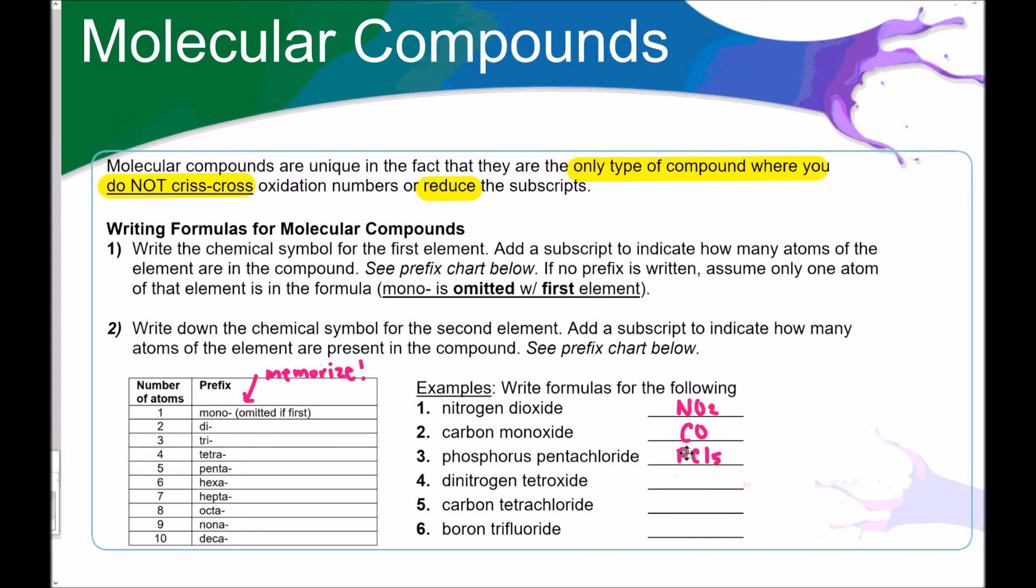Welcome back. Let's see how you did. Dinitrogen tetroxide. Dinitrogen, two nitrogens, tetroxide. Tetra is the prefix for number four. So N2O4. Here's what's interesting about this one. You do not reduce the subscript. So I know with all the other ones you do, but with molecular compounds you don't. Carbon tetrachloride, CCL4, and boron trifluoride, BF3. If you didn't get these all right, pause the video, raise your hand, ask for help. Let's move on.